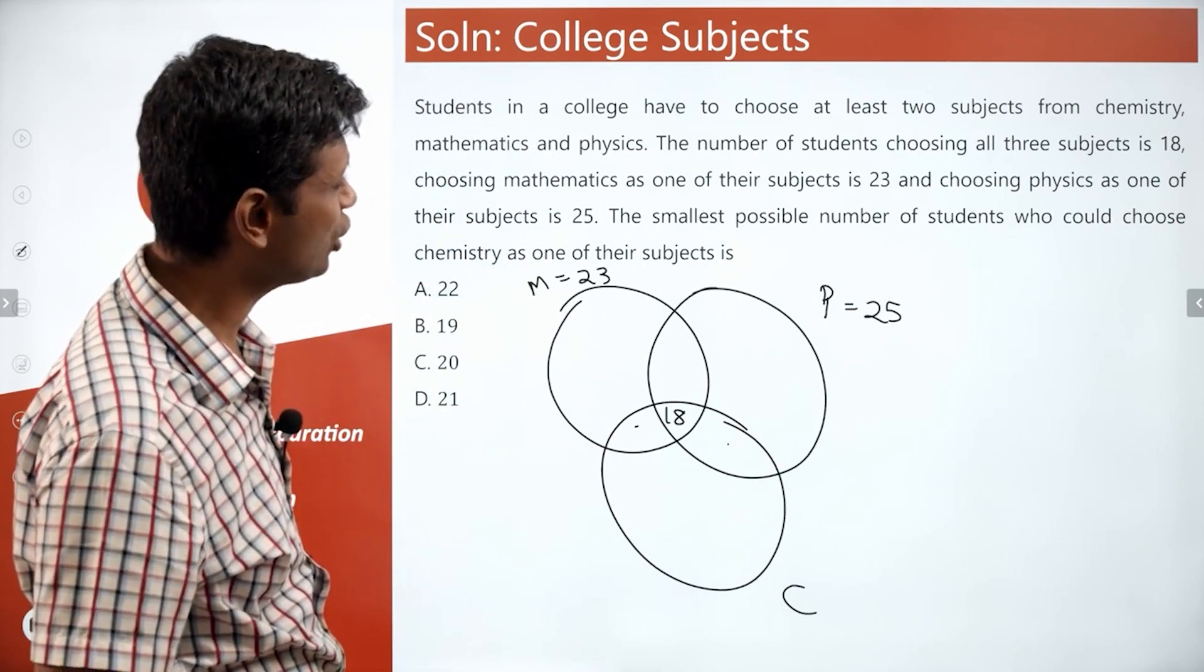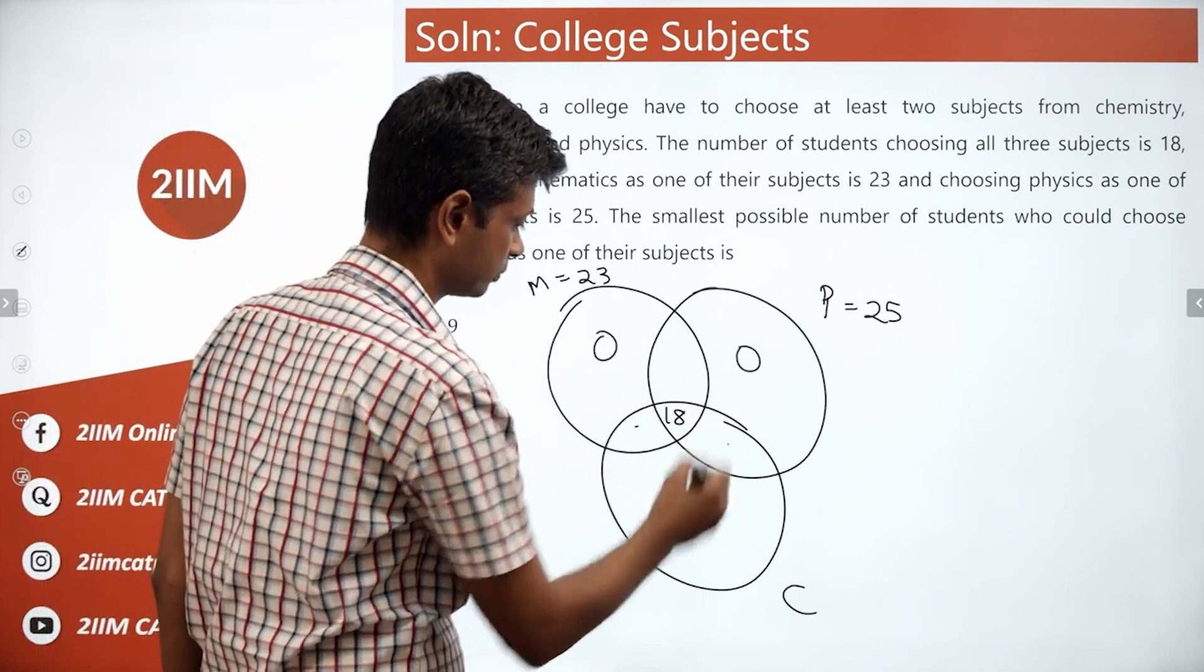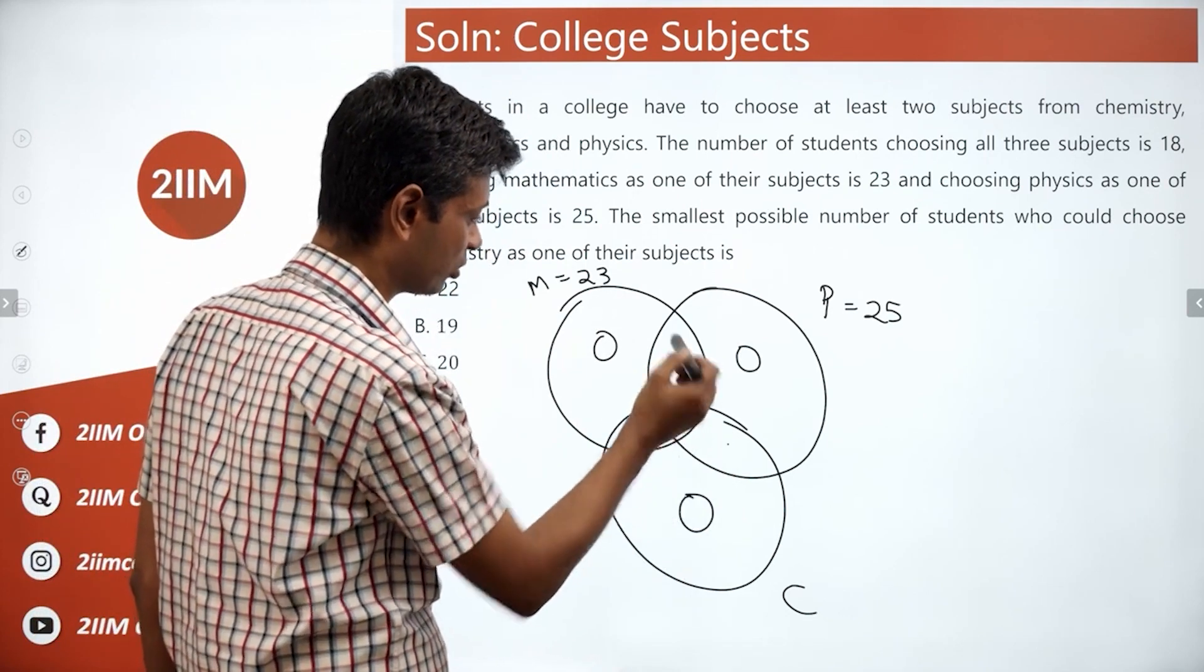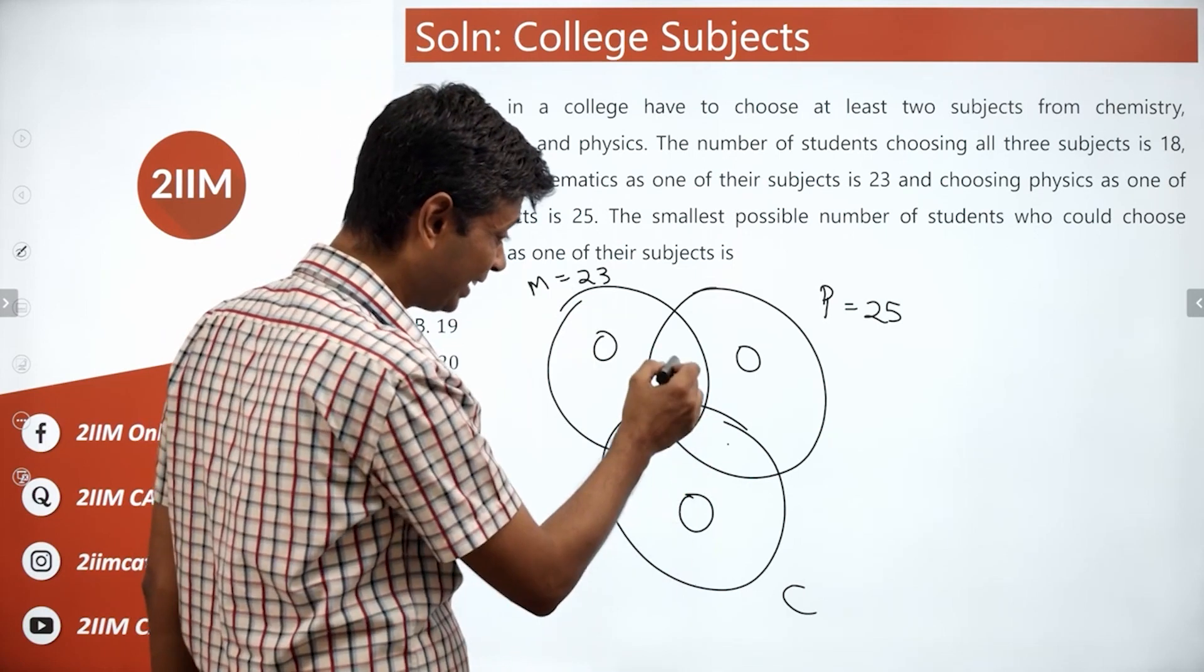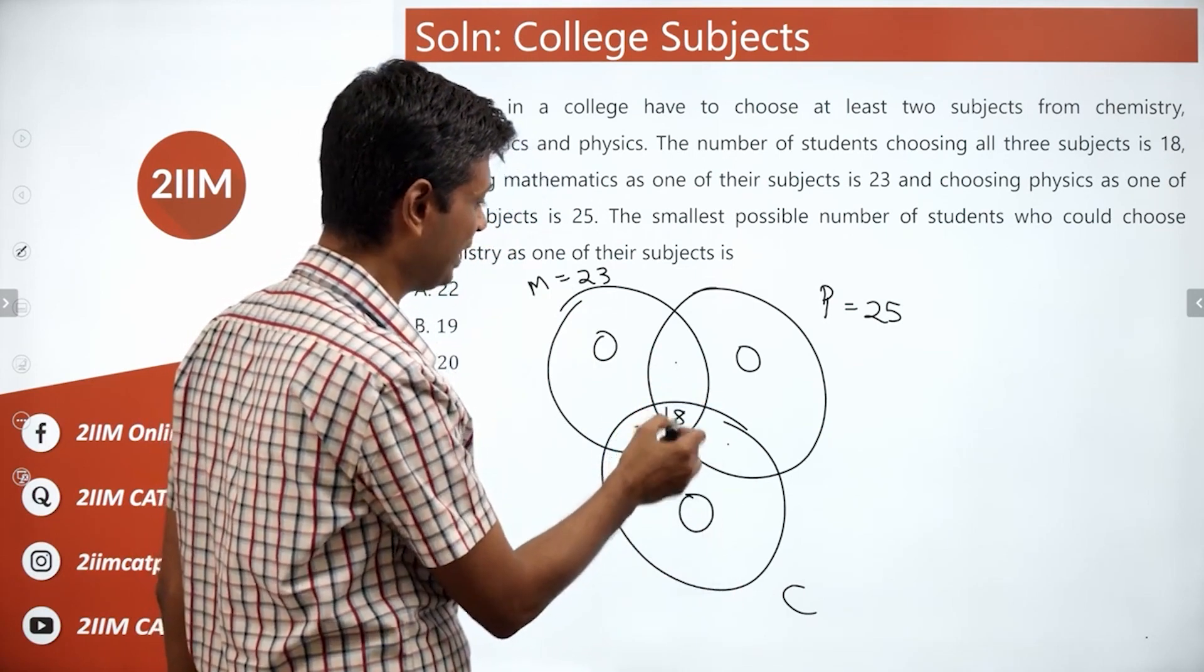College students have to choose at least two subjects from chemistry, mathematics, and physics. So these are all zero. If both of these were zero, the entire overlap has to sit here. That's not possible because this is 23, this is 25. The higher this is, the smaller this could be.